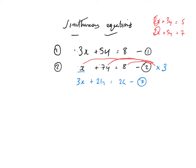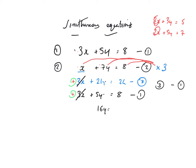I can now use equation 1 underneath to start eliminating things. That was 3x plus 5y is equal to 8. I can now definitely get rid of the x's. Since the signs are both positive — same sign, so subtract — it's going to be equation 3 minus equation 1. They'll cancel out. 21y take away 5y is 16y, and 24 take away 8 is 16. So y equals 16 over 16, and y is equal to 1.